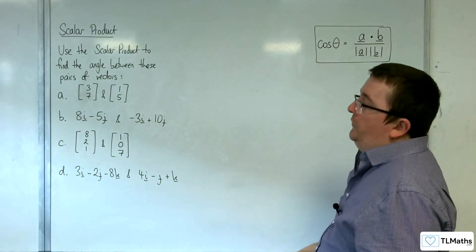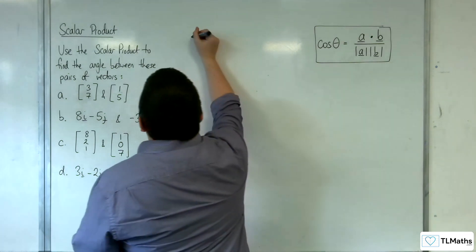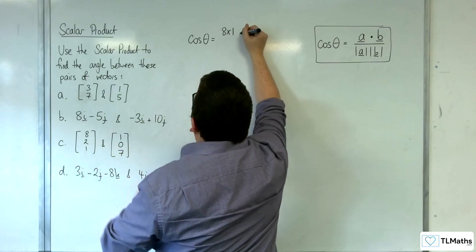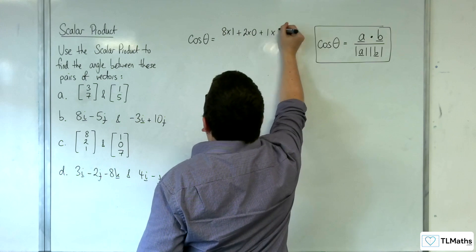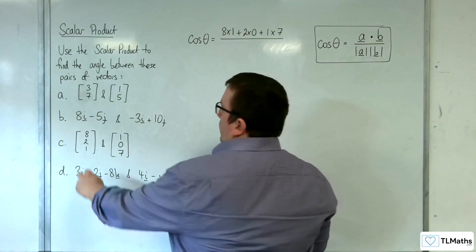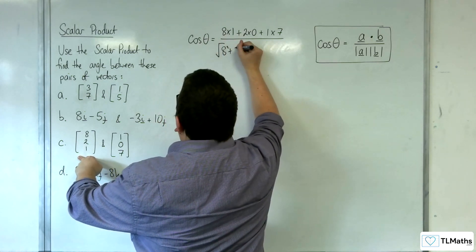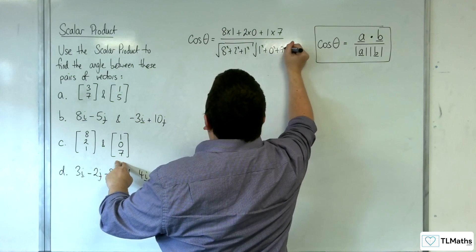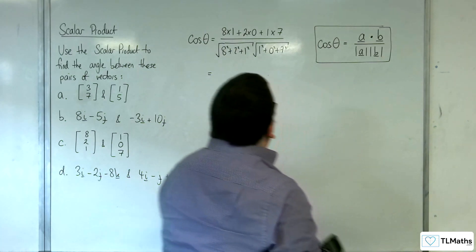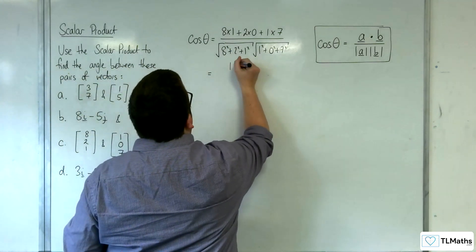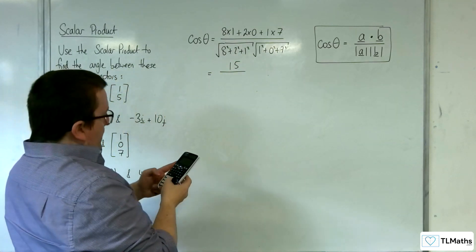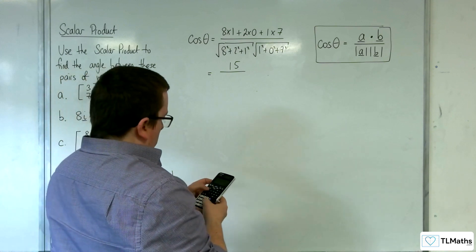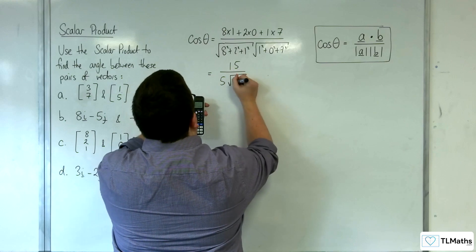Let's move up to 3D now. For C, we've got vectors (8, 2, 1) and (1, 0, 7). Cosine theta is going to be equal to: we've got 8 times 1, plus 2 times 0, plus 1 times 7 in the numerator — that's A dot B. Then we want the lengths of the two vectors: the square root of 8 squared plus 2 squared plus 1 squared, times the square root of 1 squared plus 0 squared plus 7 squared. In the numerator we've got 8 plus 7, so 15, over 8 squared plus 2 squared plus 1 squared times 1 squared plus 7 squared. We should get 5 root 138 in the denominator.